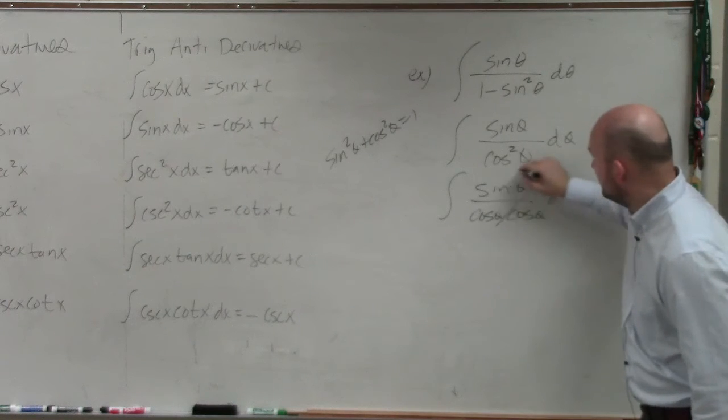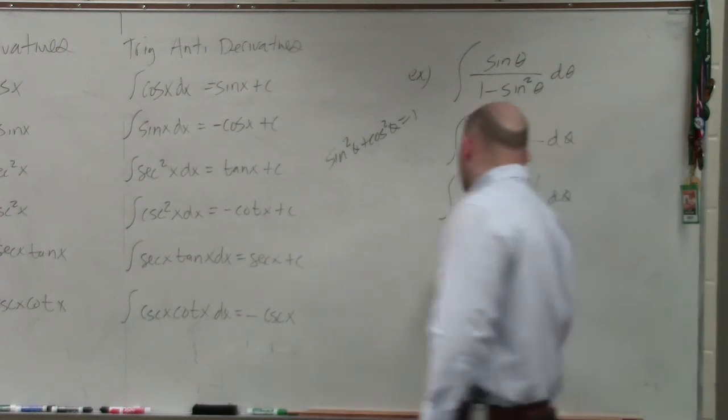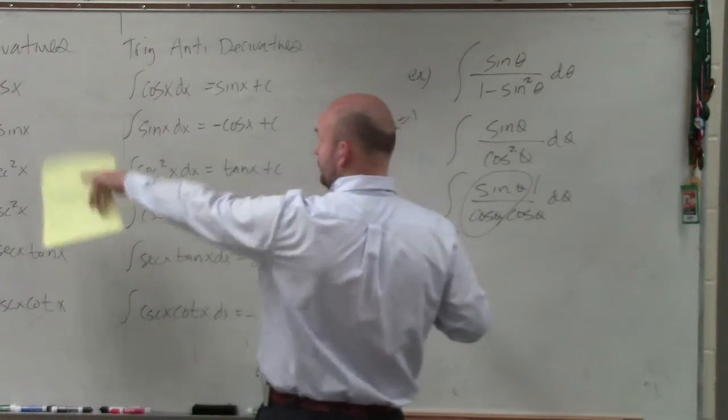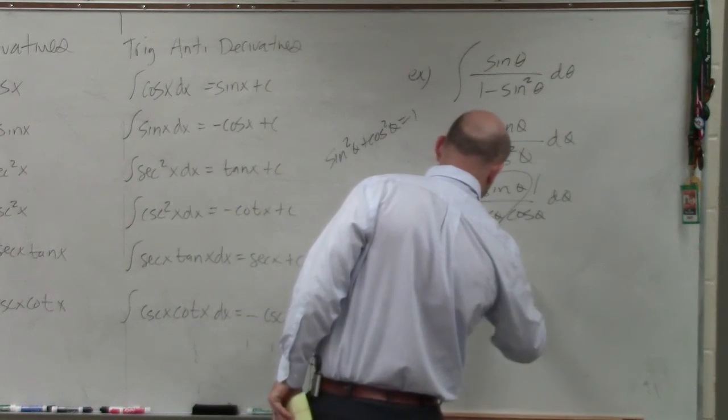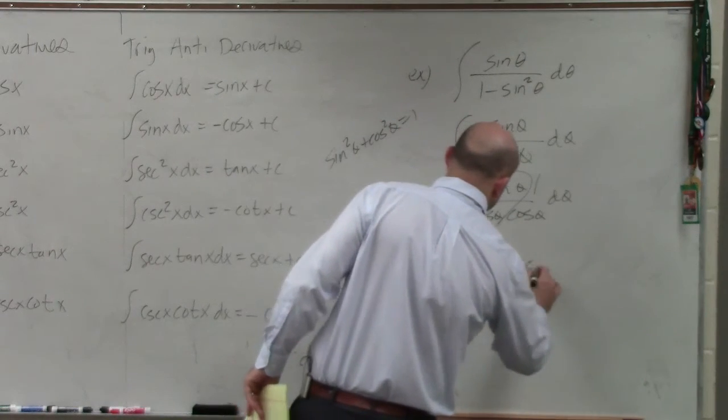What's nice about this, though, is I can group these together and make a 1 over there. So now I'm integrating sine over cosine, using my quotient identity, is tangent of theta. And 1 over cosine using my reciprocal identities is secant of theta.